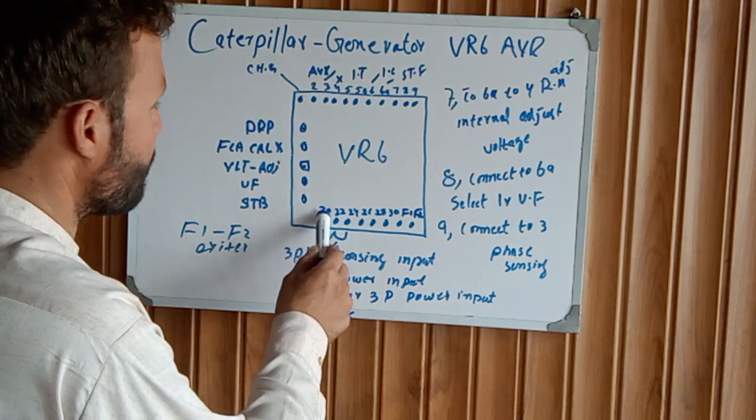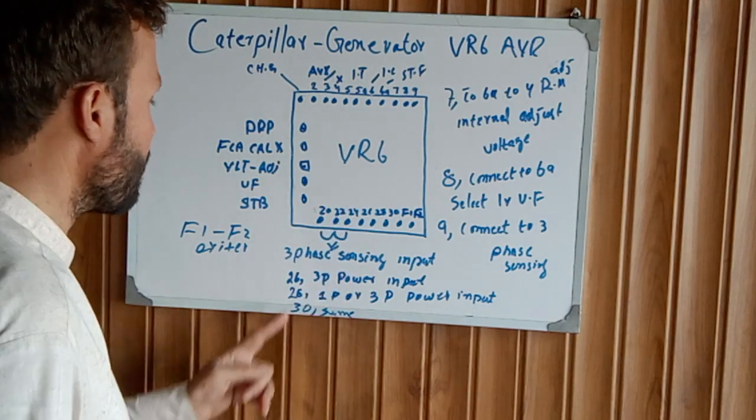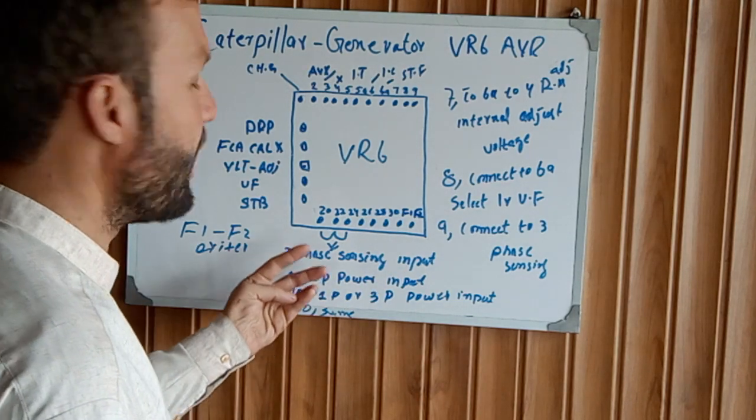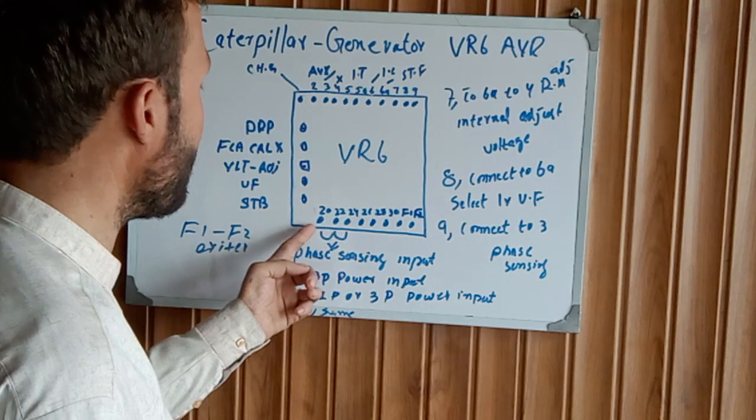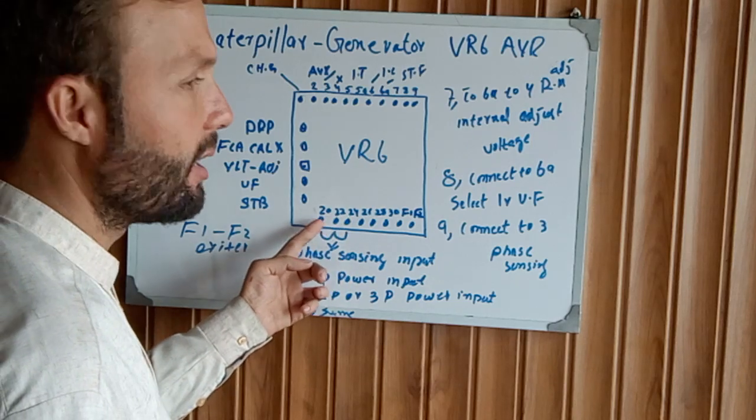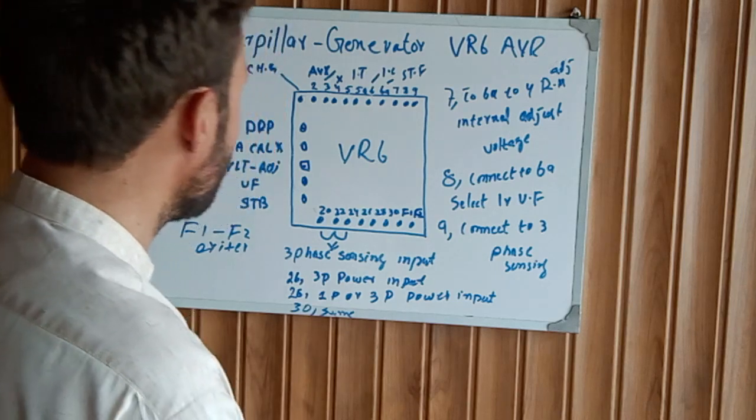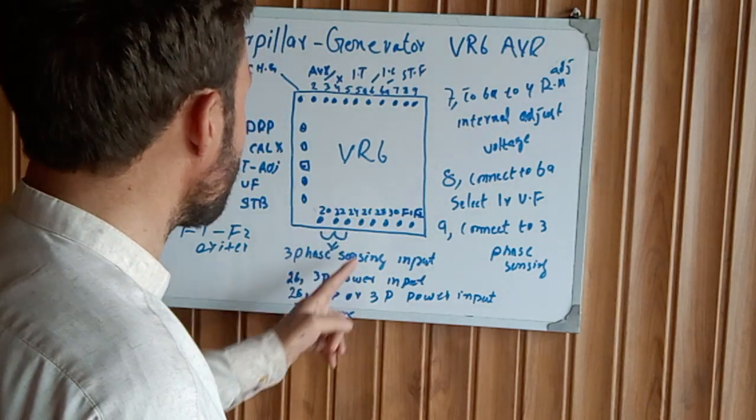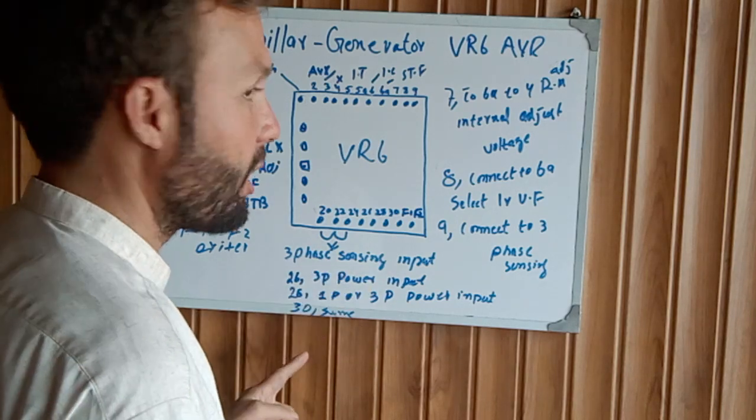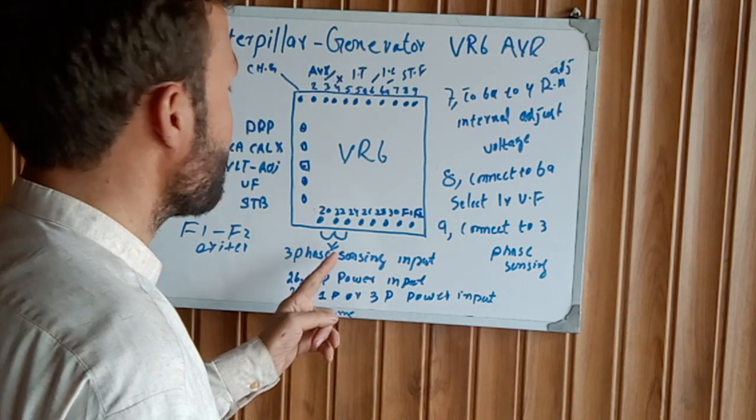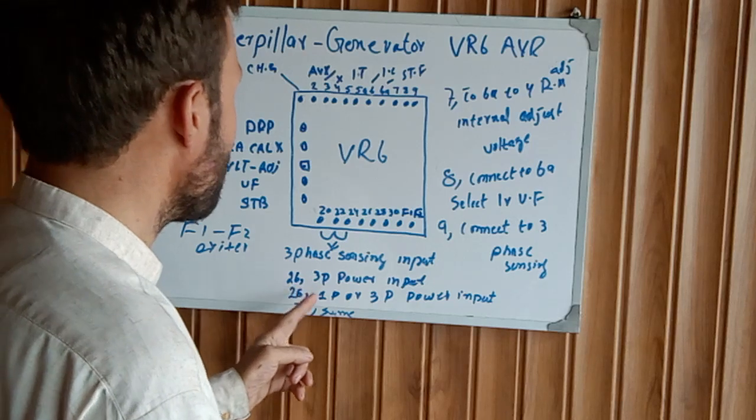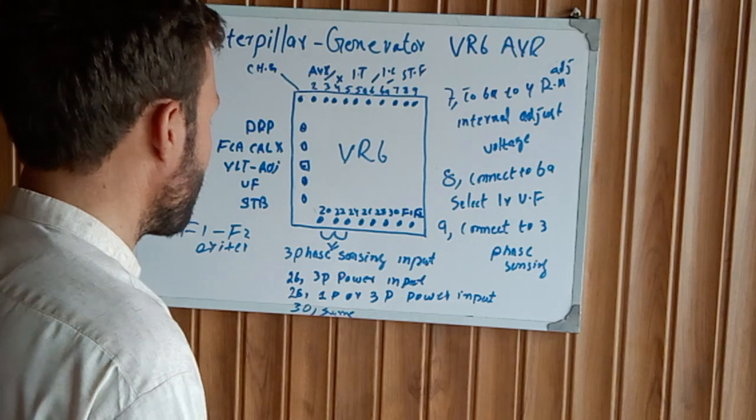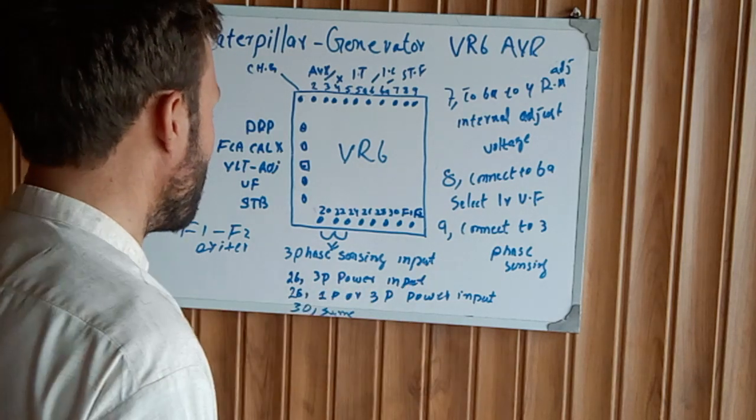After that, there is 20, 22, and 24. Three-phase sensing input. Like L1, L2, L3. Like A, B, C. Like X, Y, Z. Three phases of the alternator input sensing. 26, three-phase power input. Take one wire from the phases and connect to the 26 three-phase power input.